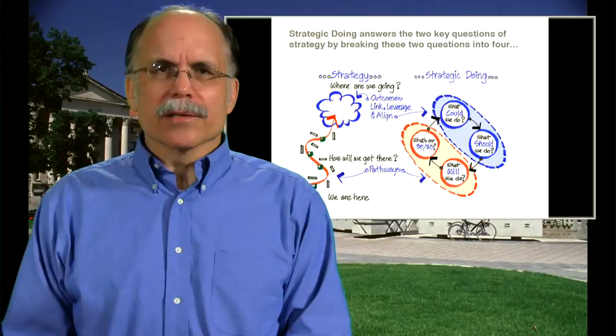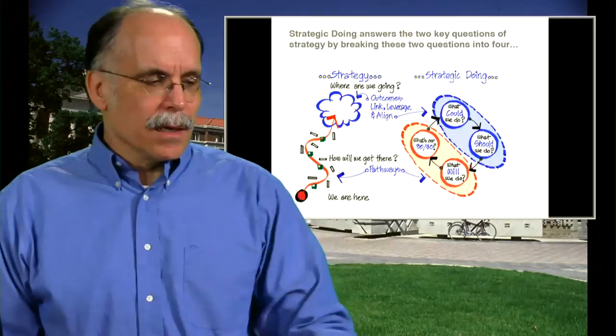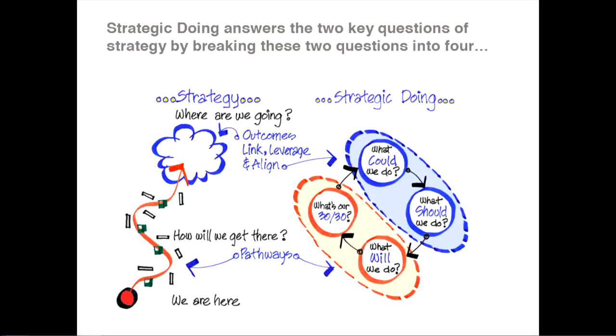So let's walk through strategic doing for a minute. Strategic doing is focused on two questions, the core questions of strategy. The first question is, where are we going? So we need outcomes. We need clear, measurable outcomes. The second question of strategy is, how will we get there? So we also need pathways. These outcomes and these pathways define the strategy.